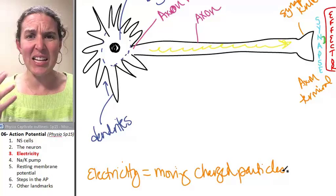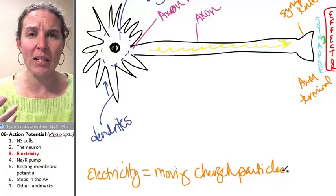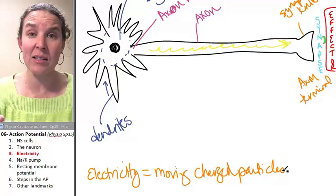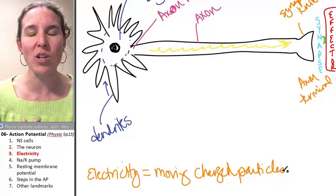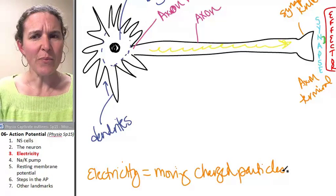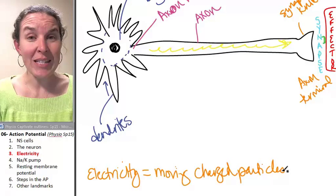But still, there's this abstract quality to the concept of electricity that I think is difficult, especially when you start thinking - okay, a neuron is not going to light up.